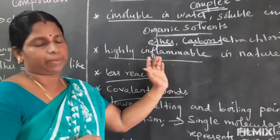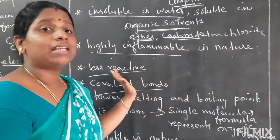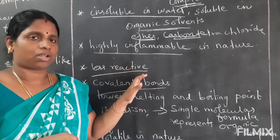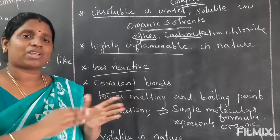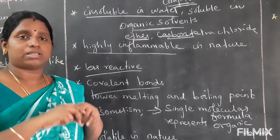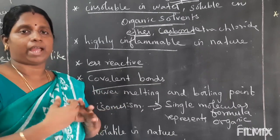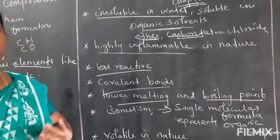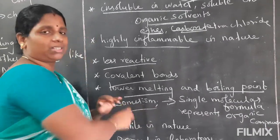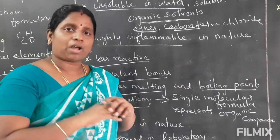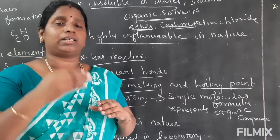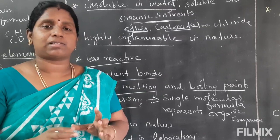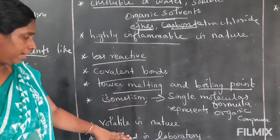Next characteristic: highly inflammable — meaning it will easily burn. And less reactive — carbon takes a very long time to react when combined with inorganic compounds. Next: covalent compounds — sharing of electrons. Carbon is highly shared with nearby atoms. Next: lower melting and boiling points. And isomerism — the molecular formula is always the same, but the physical and chemical properties are different. Same molecular formula, different physical and chemical properties — that is called isomerism.